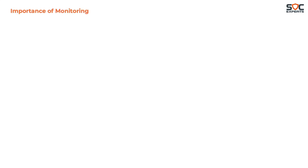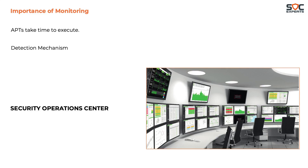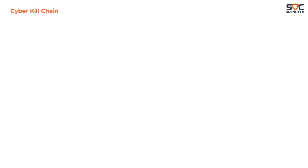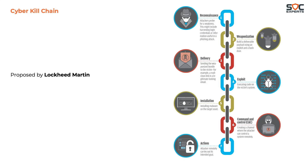This is how a targeted attack takes place. The good news for defenders is that most advanced targeted attacks take time to execute. A company with solid detection mechanisms can identify the attack at an early stage and stop it. This is where the Security Operations Center plays a major role — acting as the eyes of the company by continuously monitoring the network. The phases walked through here are highlighted in the Cyber Kill Chain framework, proposed by Lockheed Martin, which describes seven phases of a targeted attack.